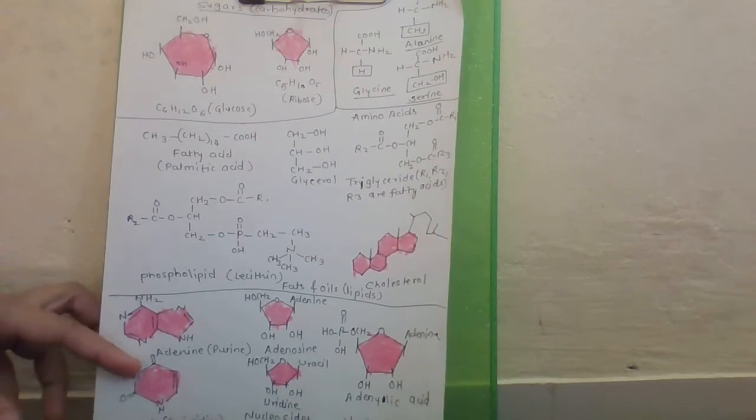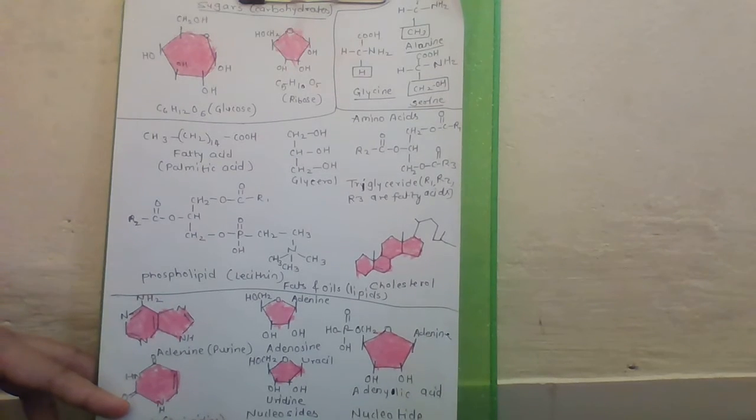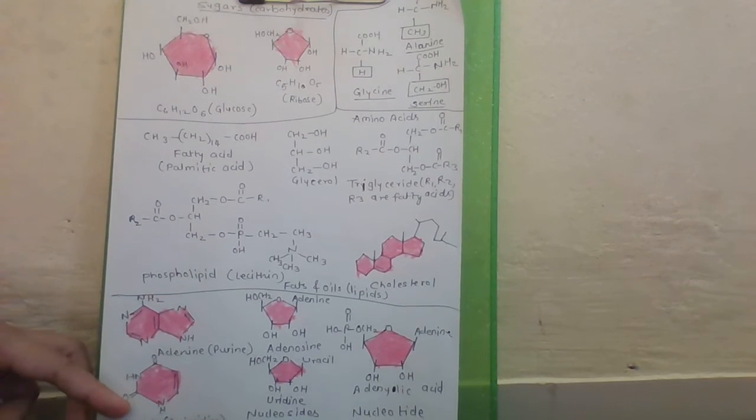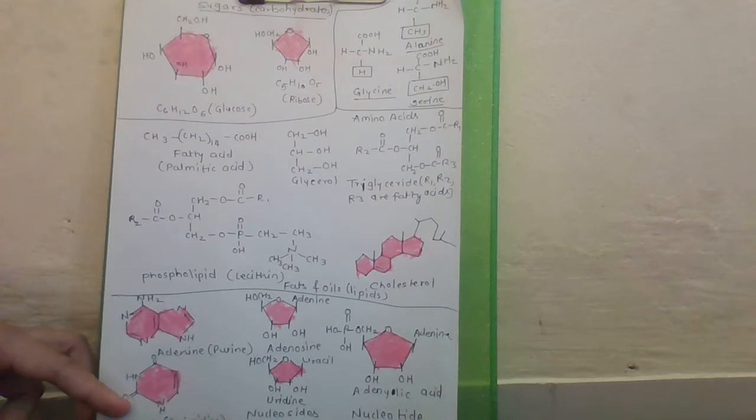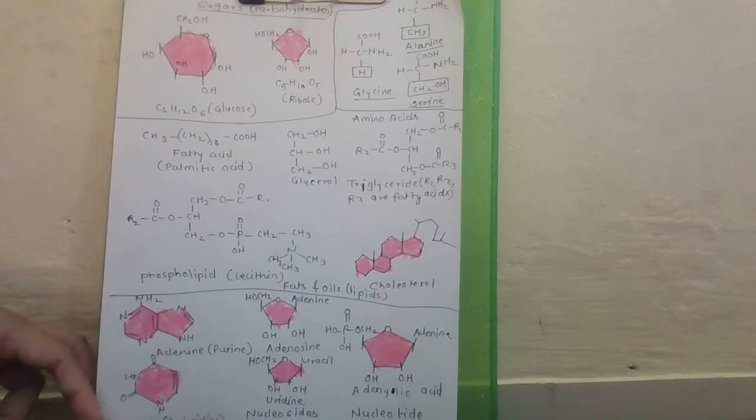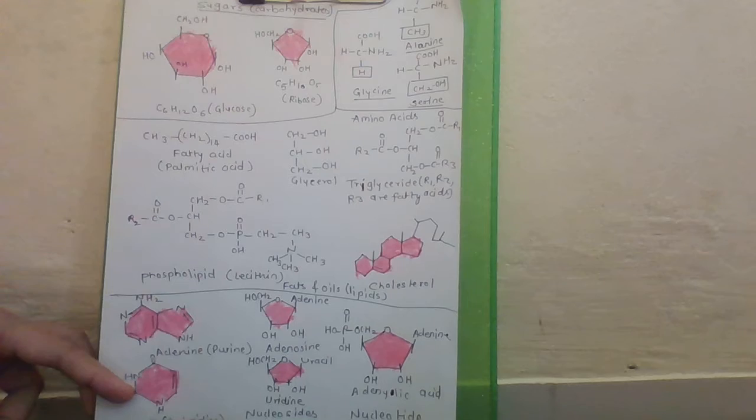And the third type of biomolecules are based on heterogeneous ring structure. For most of these structures, the base is nitrogen.